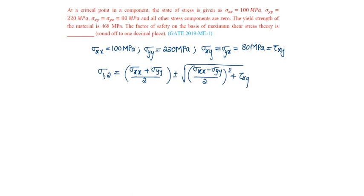So this equals 100 plus 220 by 2 plus or minus under root of 100 minus 220 by 2 whole square plus 80 square.